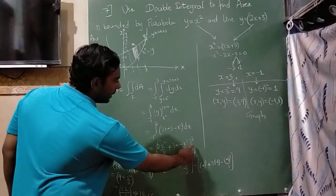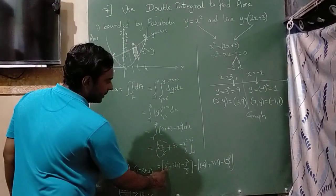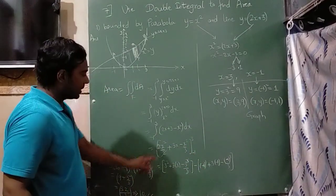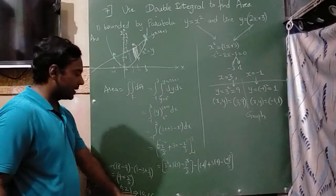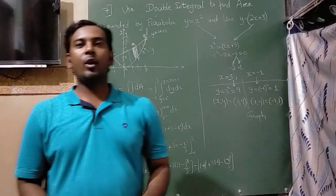This I am going to apply upper limit as 3 and lower limit as minus 1. As if you apply these values, you will get answer as 10.66. I hope you all understood. Thank you.